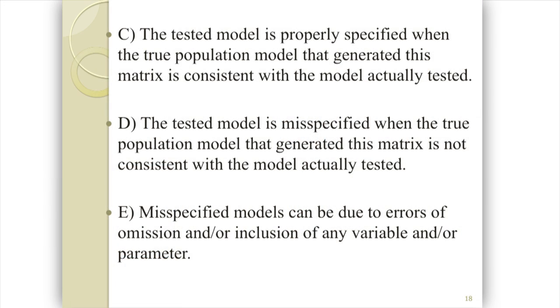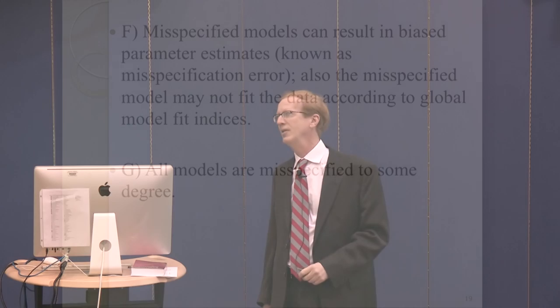The closer the reproduced covariance matrix is to the sample covariance matrix, the more properly specified your theoretical model is — the closer it is to the true model. The further you get away, the more the model is misspecified: you're missing important relationships or important variables. Misspecified models result in parameter estimates that are somewhat biased. If you've missed a key variable, its explanatory power is missing, which changes the other estimates in your model.